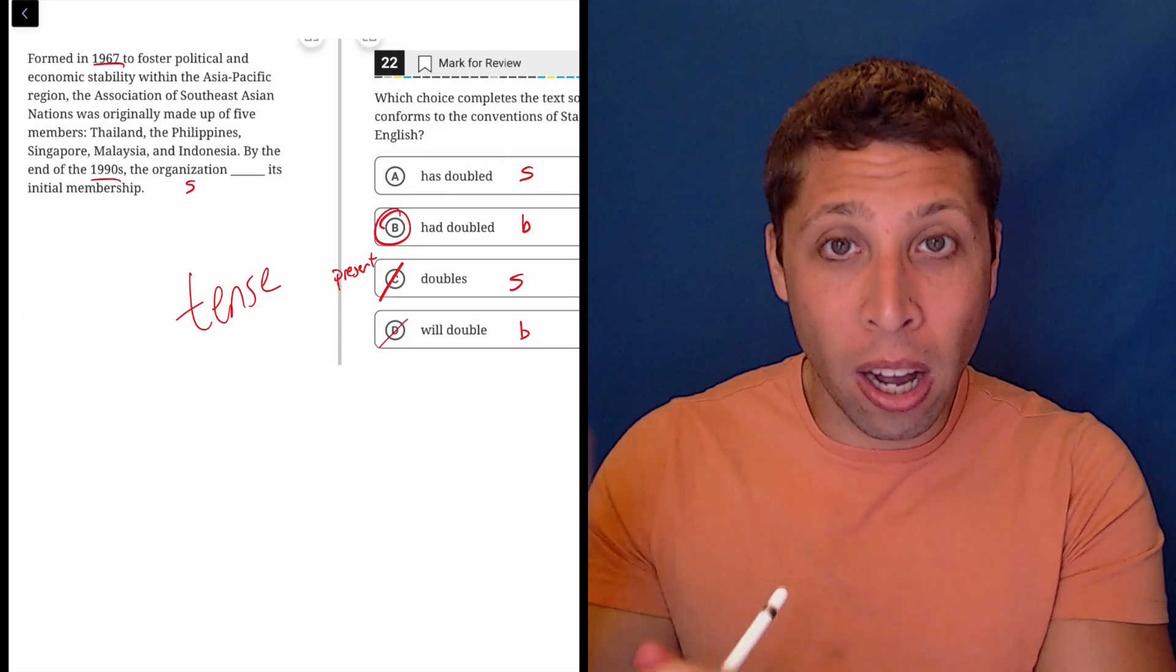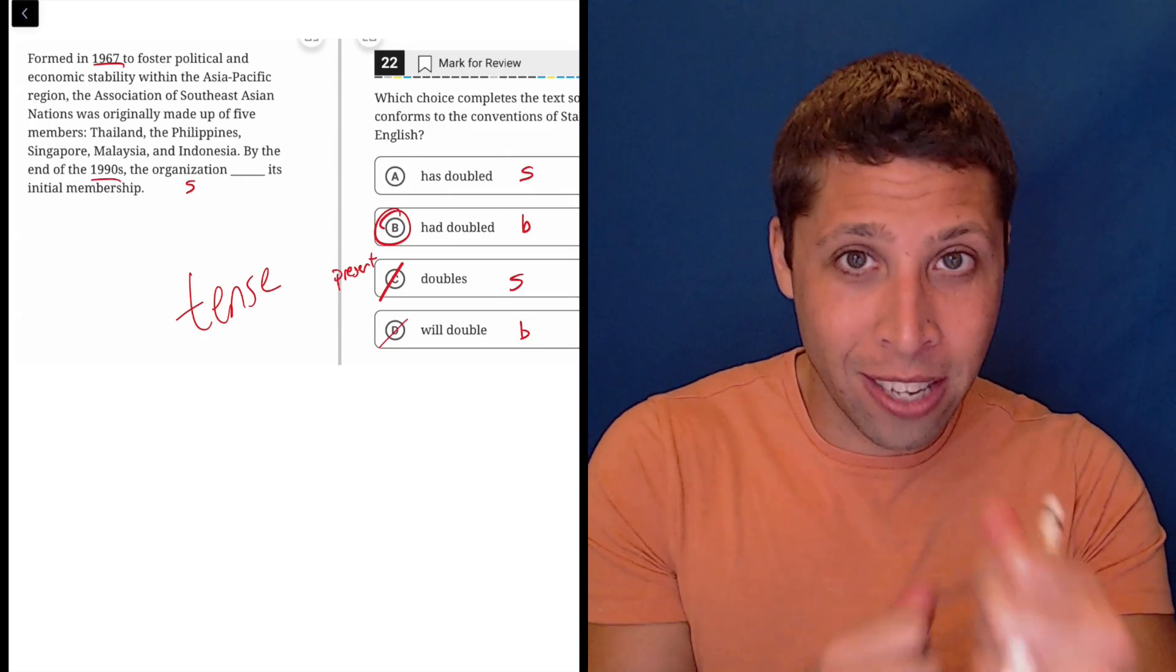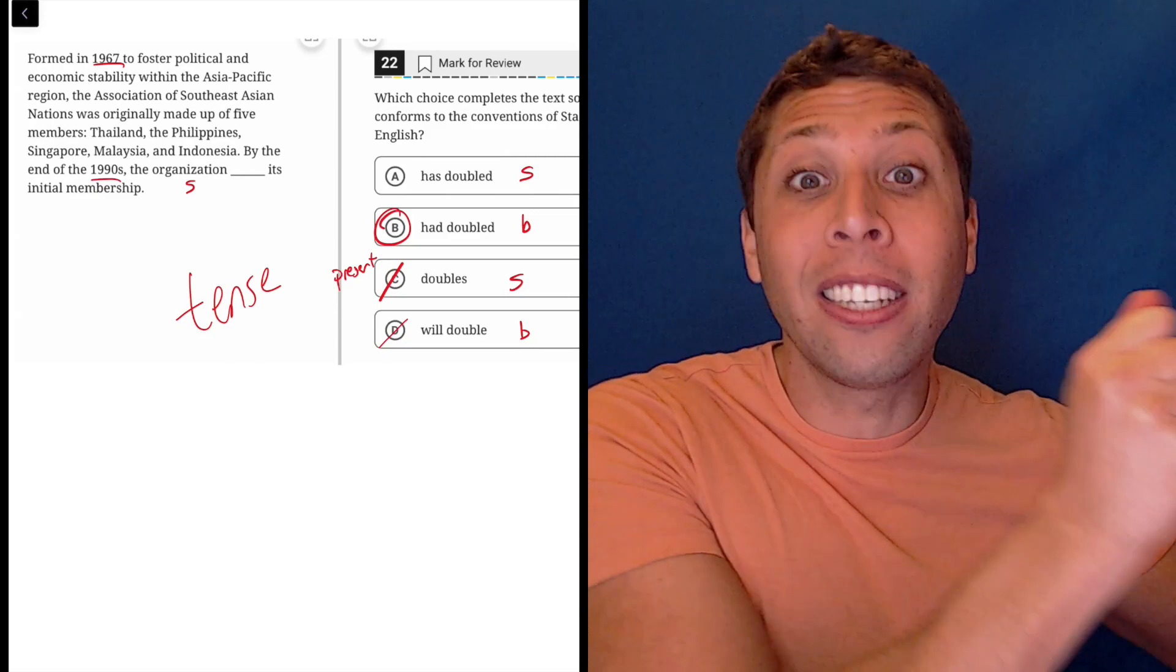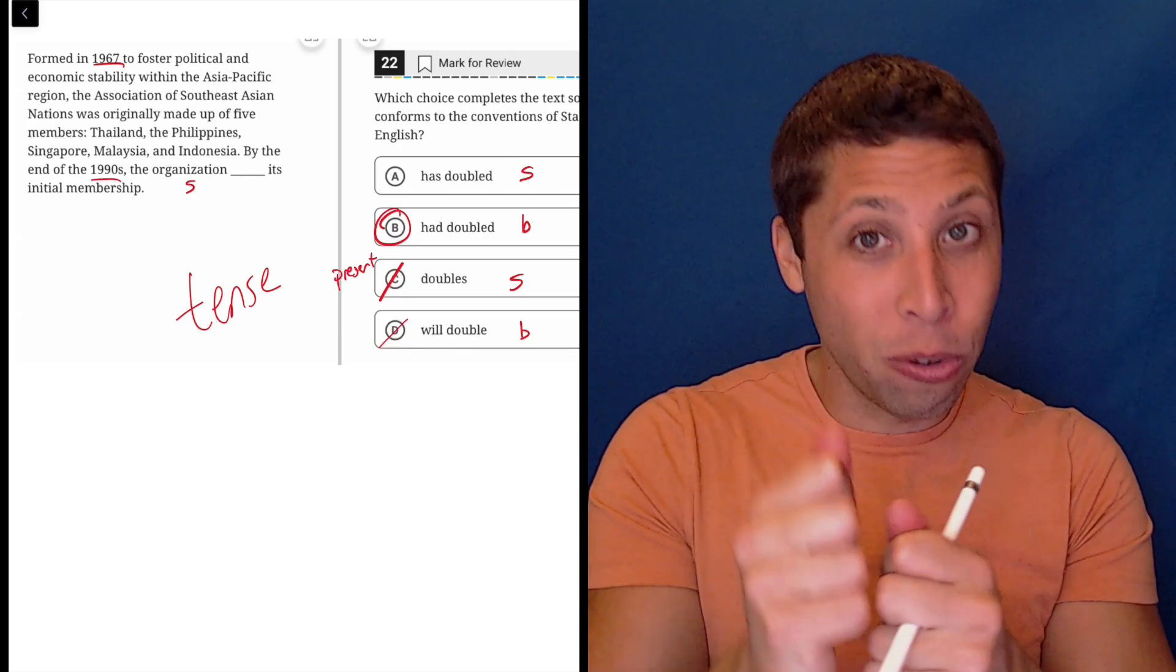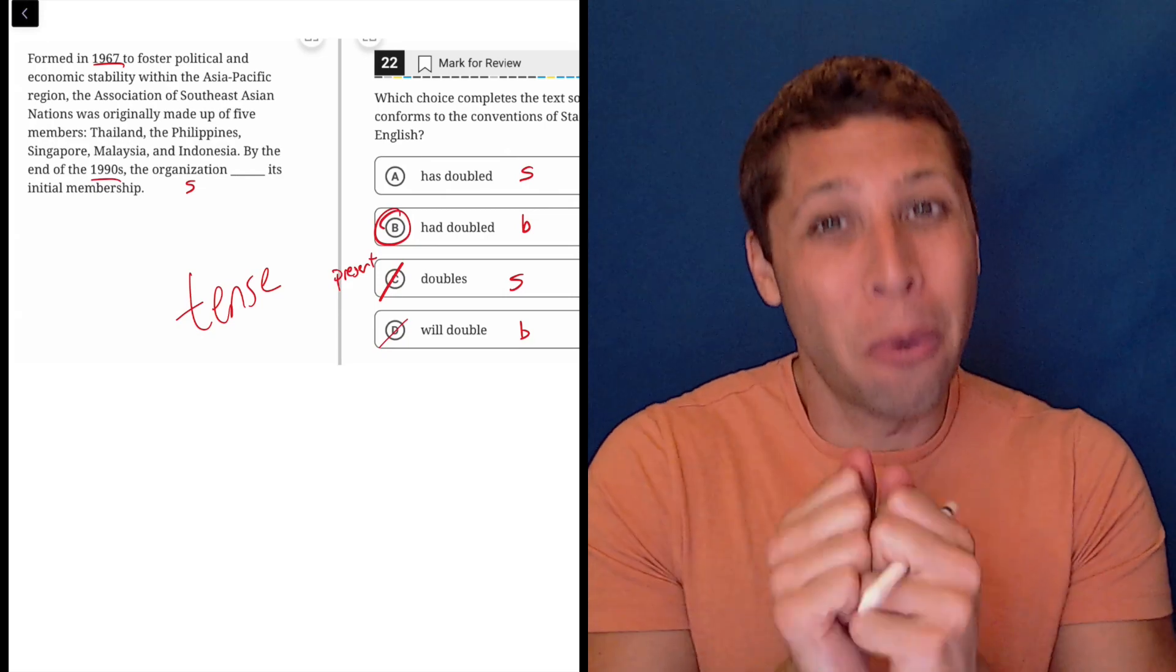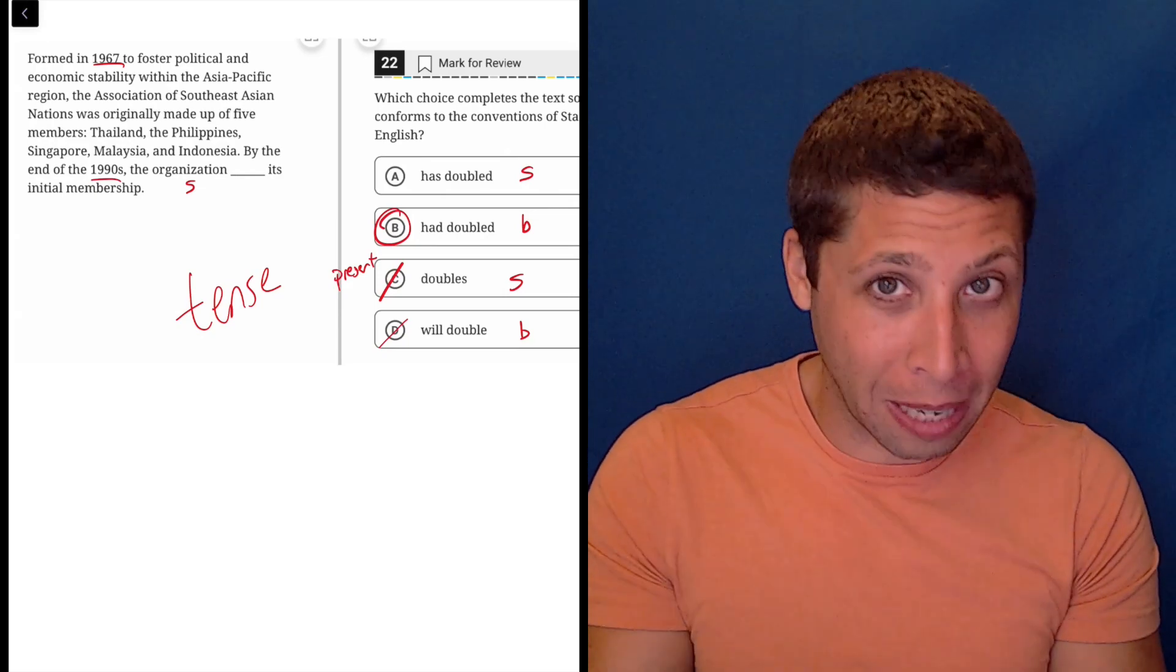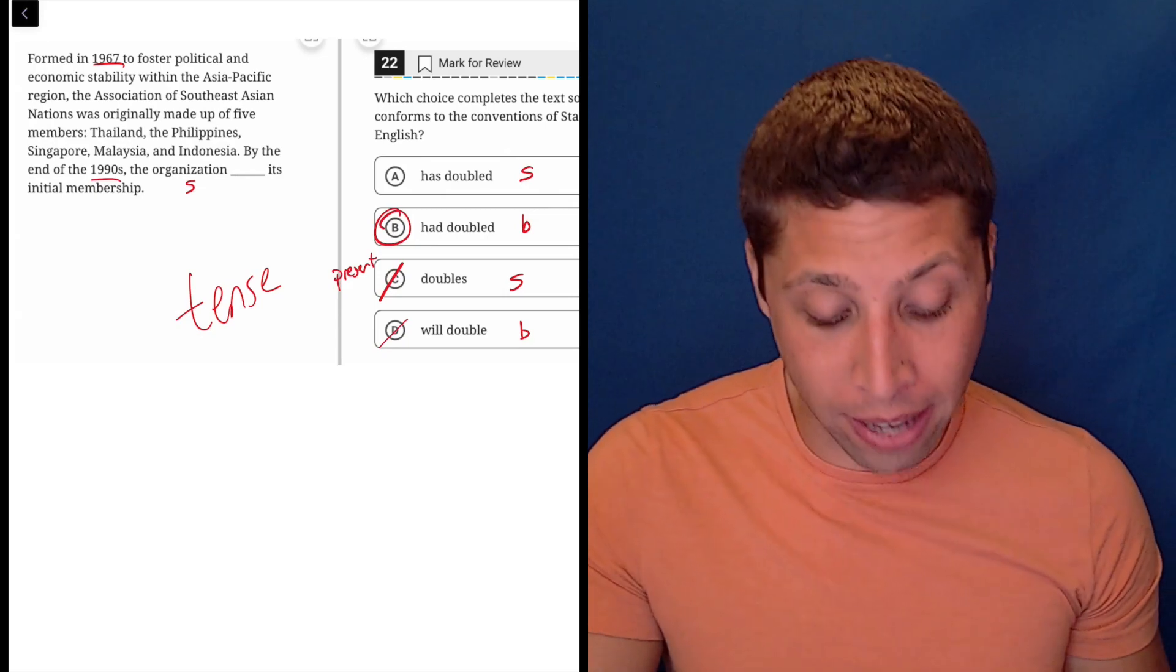A is something that's gone on that maybe started in the past, it continued for a while, and is still continuing today. Whereas choice B is it started in the past and it continued for a while, but then at some point it ended, or at least the way we're talking about it ended. And so that is why that is the right answer here.